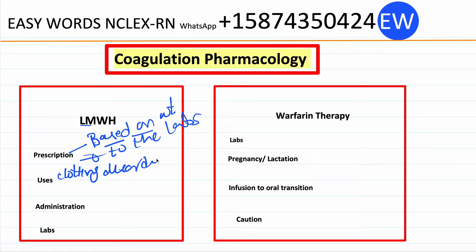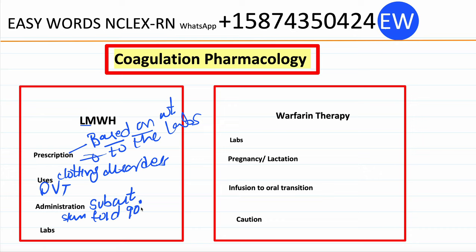Low molecular weight heparins are also used to prevent DVT post-operatively. They are given subcutaneously — giving into the muscles may cause bleeding. To administer safely, hold the skin fold and insert a one-centimeter needle fully at a 90-degree angle, maintaining the skin fold throughout the injection. If the patient is very lean, use a larger needle and inject at a 45-degree angle.